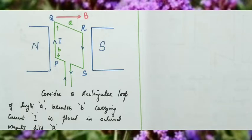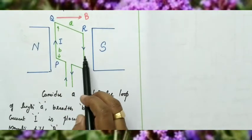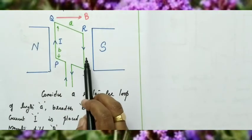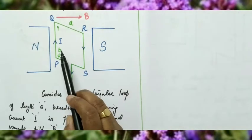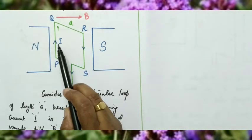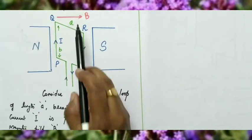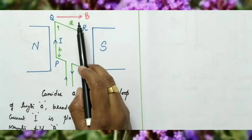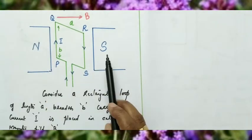We consider a rectangular current loop PQRS. It has length A and breadth B, carrying current I, placed in an external magnetic field B. The direction of the magnetic field is from north to south.